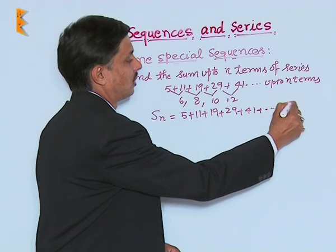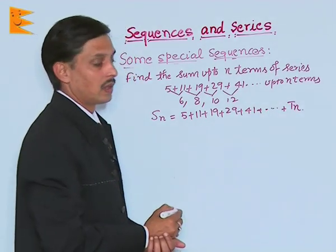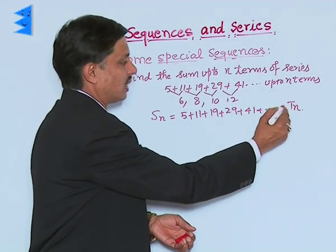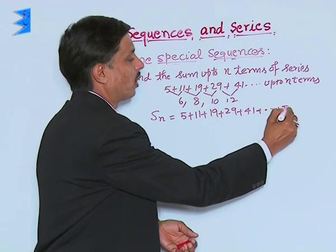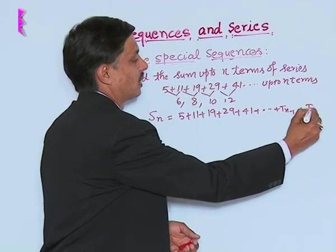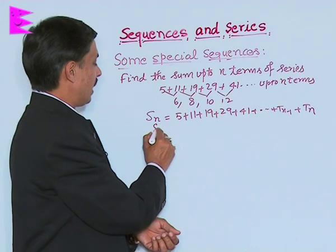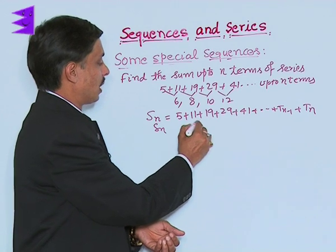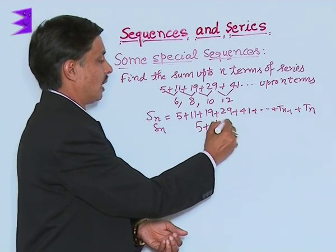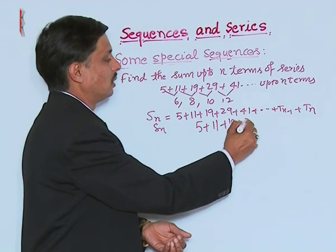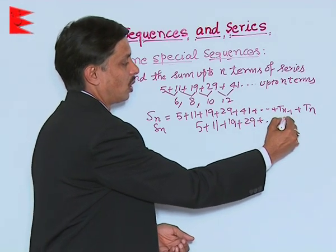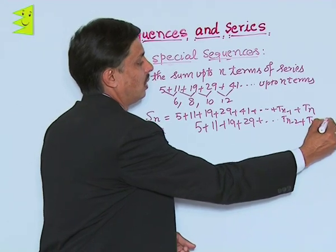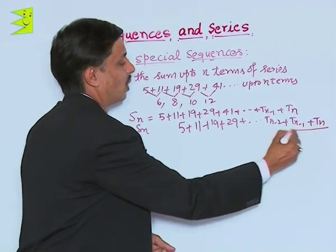Let us suppose its nth term is Tn, which is the last term. If Tn is the last term, then the term before it has to be T(n-1). Writing Sn again by shifting one term forward, this becomes 5 + 11 + 19 + 29 + ... + T(n-2) + T(n-1), and Tn goes one step forward.